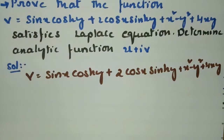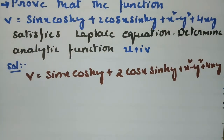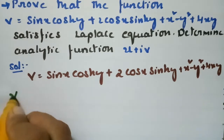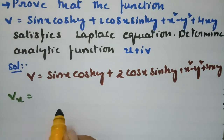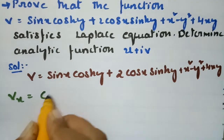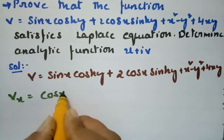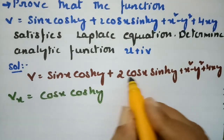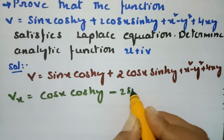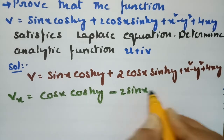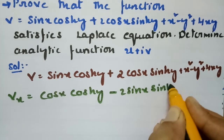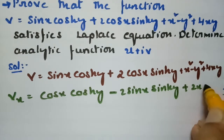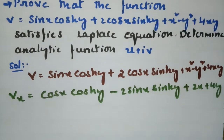I have to differentiate with respect to x one time. For sin(x) this is cos(x) and cos(hy) remains. For cos(x) this is minus sin(x) times sinh(y). For x squared this is 2x, and for 4xy the x derivative gives 4y.